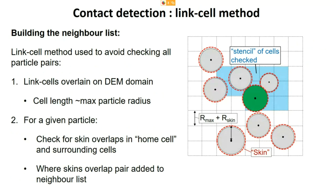To build the neighbor list efficiently, a further stage called the link cell method is used to avoid checking every pair of particles. A grid is overlaid on the DEM domain, with cell size slightly larger than the maximum particle radius plus skin distance. When building the neighbor list for a given particle, the neighboring cells shown in light blue are checked, and any particles with their center within those cells are tested to see if their skins overlap. If so, they are added to the neighbor list, making construction much more efficient.